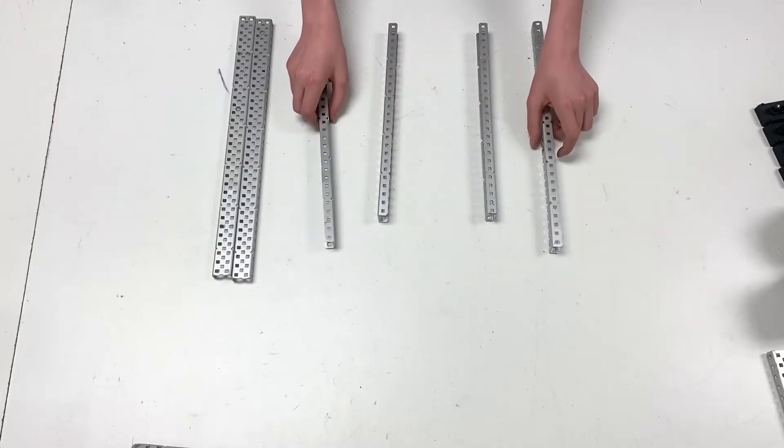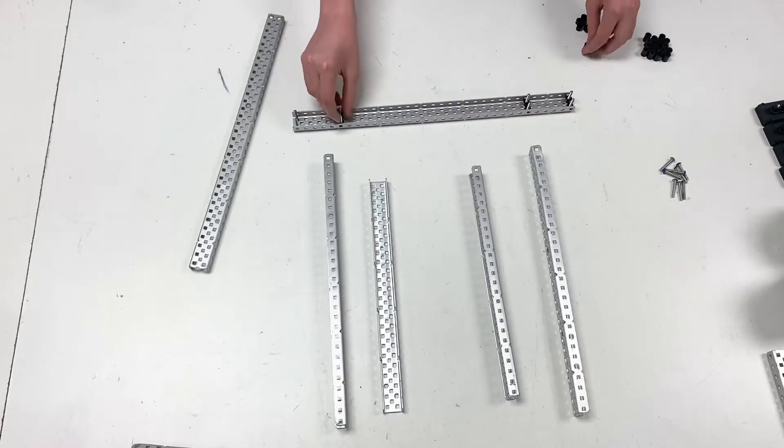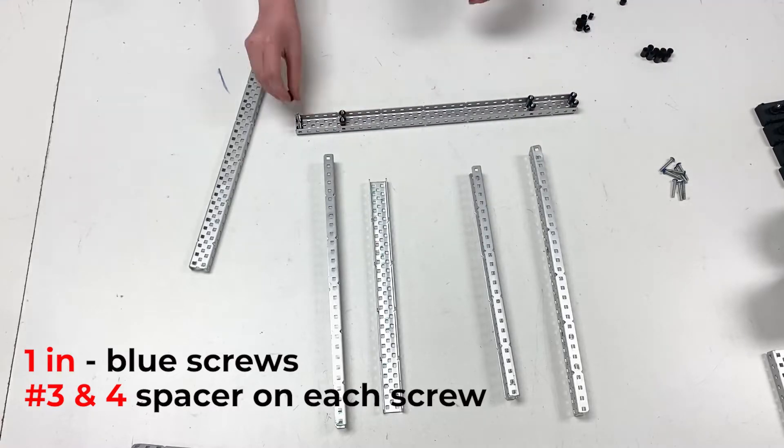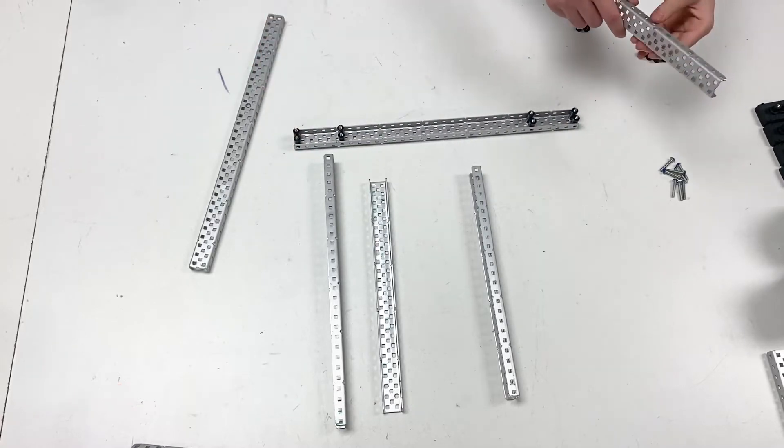So the first thing that I like to do is lay out all of my C channels. I'm using one inch screws with a four and a two spacer to space off the C channel on the bottom.